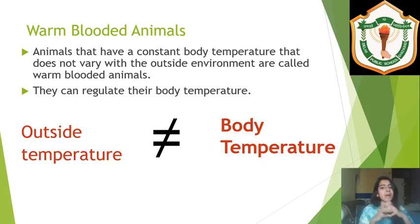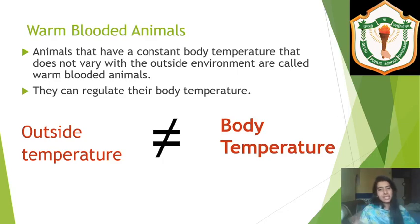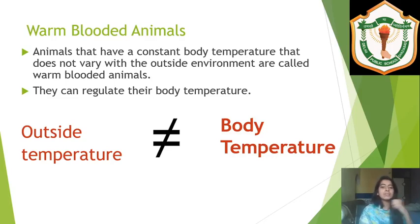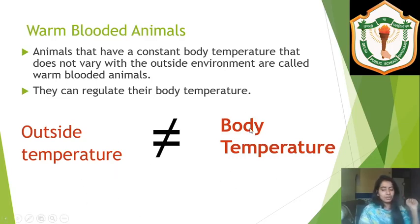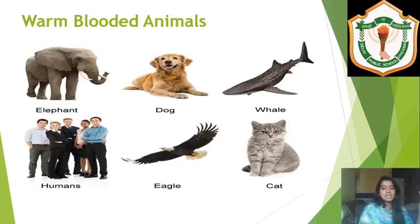Warm-blooded animals have the special ability to regulate their body temperature. They take in food and through metabolism they produce body heat. This body heat provides them insulation, which is why their body temperature will not be equal to the outside temperature. They have several ways of maintaining their body temperature.